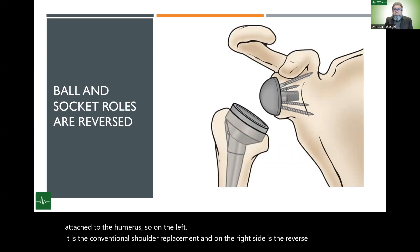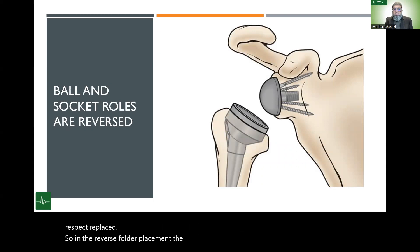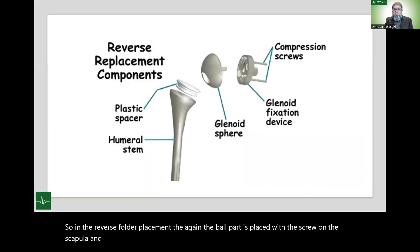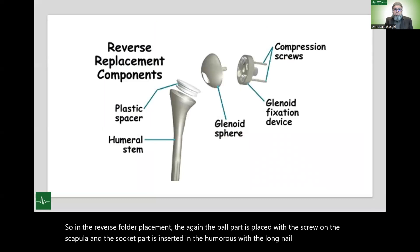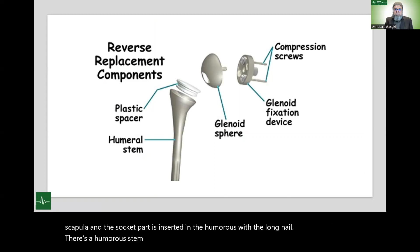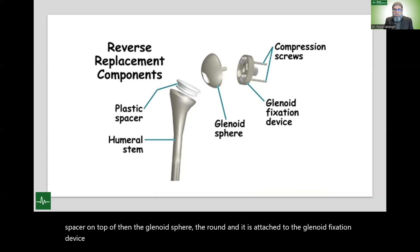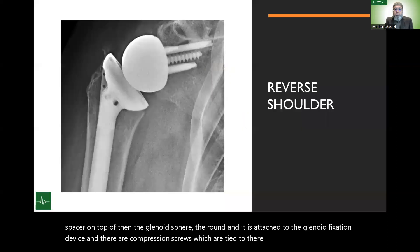In the reverse shoulder replacement, the ball part is placed with a screw on the scapula, and the socket part is inserted into the humerus with a long nail. There is a humerus stem inside the humerus with a plastic spacer on top. The glenoid component — the round piece — is tied to the glenoid fixation device, and there are compression screws tied to the scapula. Once done, it looks like this on the post-operative x-ray.